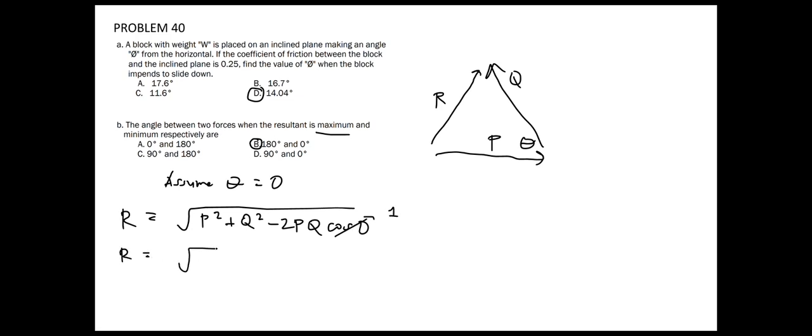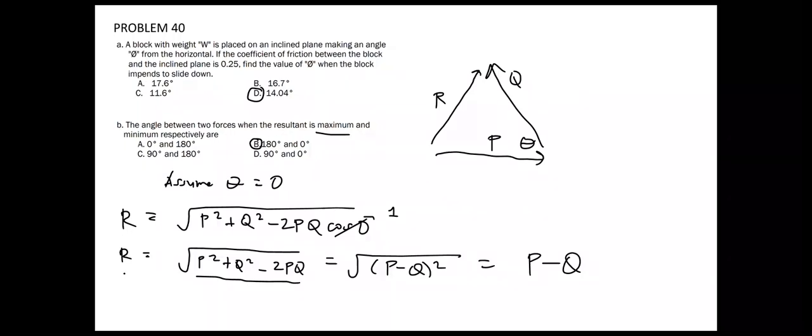And we can do some factoring of this expression. We get square root of P minus Q squared, which is equal to P minus Q. And we can see that P and Q subtract each other out, which produces the minimum force that is equal to P minus Q.